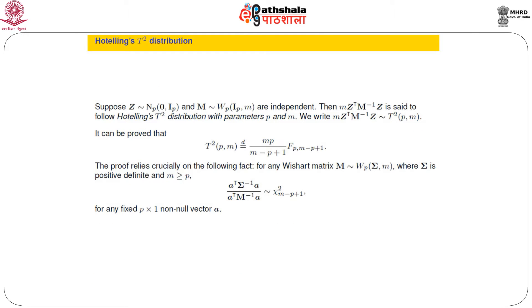We are discussing inference about the mean vector with no restriction on the mean. We said we shall also have occasion to talk about hypothesis testing with a linear restriction — that we are not going to discuss now, it will come later. In the process, we have seen an expression for the likelihood ratio statistic and an equivalent Hotelling T-square distribution which is very much analogous to the univariate quantity.